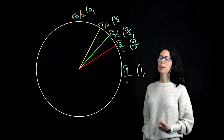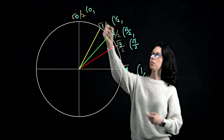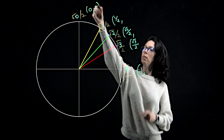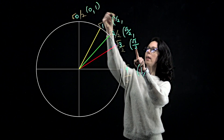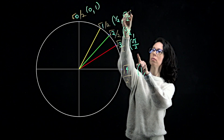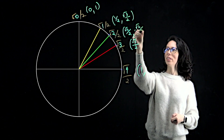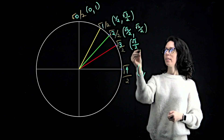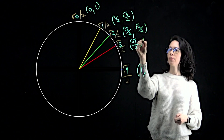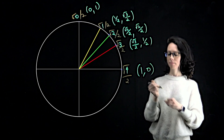For the sine values, let's just reverse them. So 1, then square root of 3 over 2, square root of 2 over 2, 1 half, and 0.